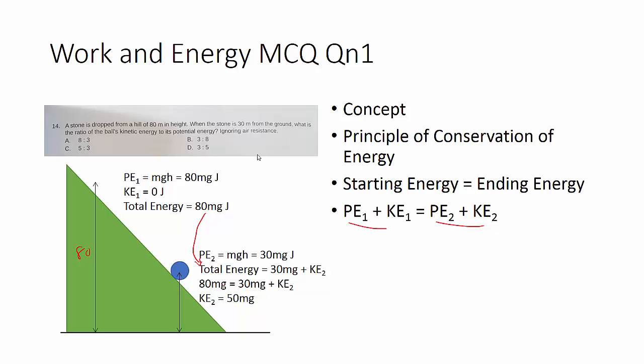So the question asks you for the ratio of the kinetic energy to the potential energy. So just arrange them accordingly. 50 to 30. And you know that, of course, this can cancel, and the ratio will be 5 is to 3. C.